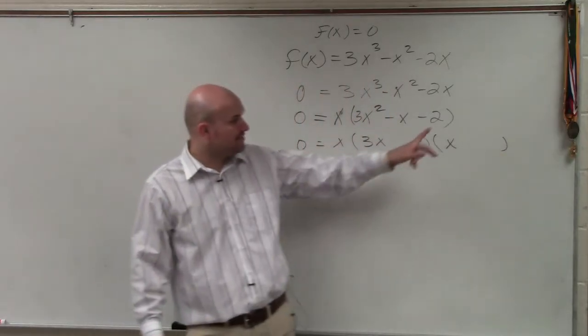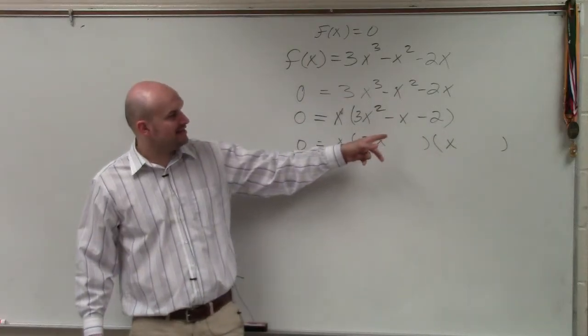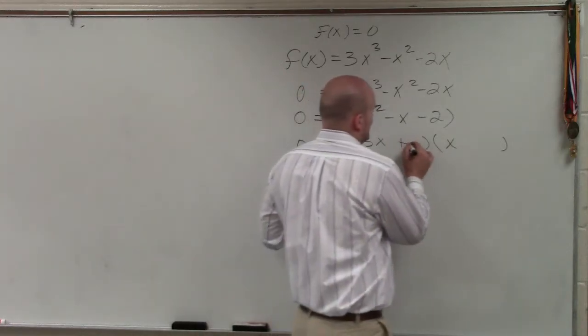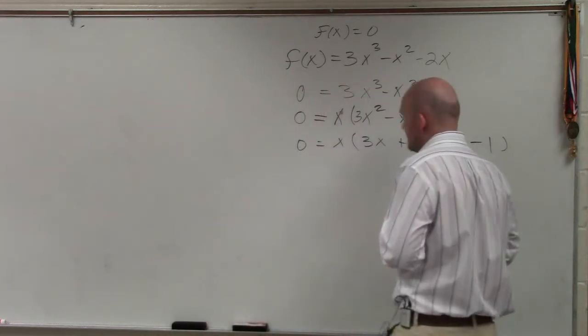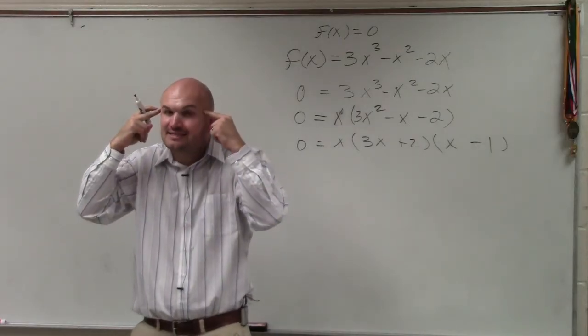Now my last two numbers need to multiply to give me negative 2, and then the middle terms need to add to give me a negative x. So I figure that's going to be plus 2 minus 1. And if I do the factoring, the foil in my head, I see that this works.